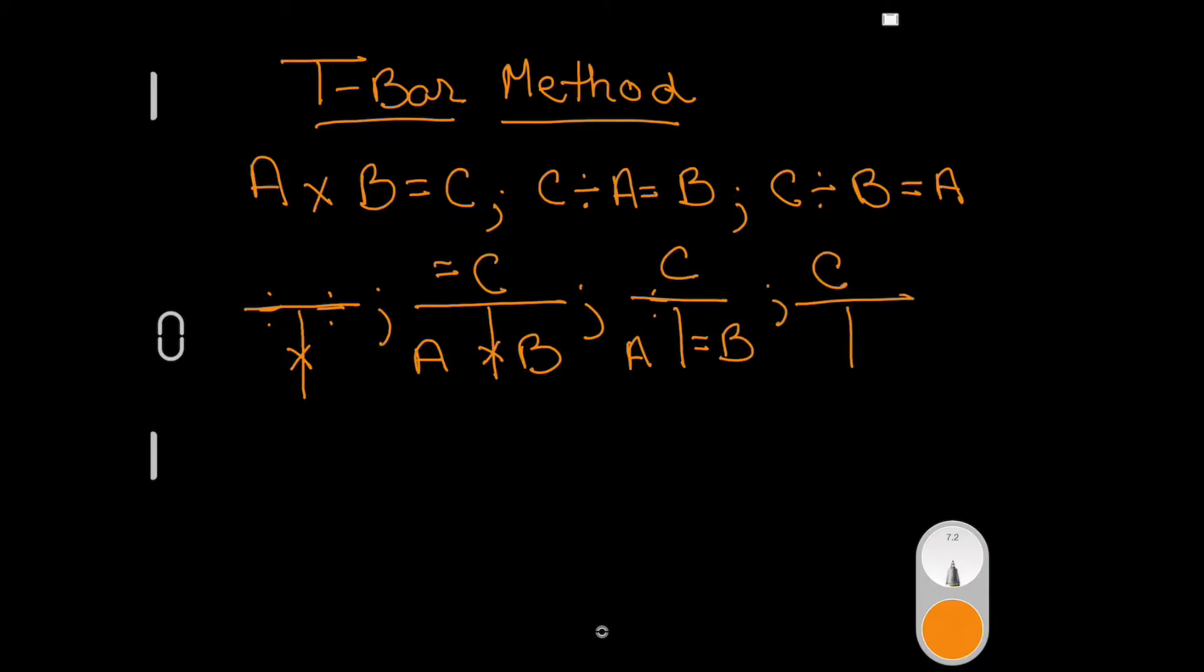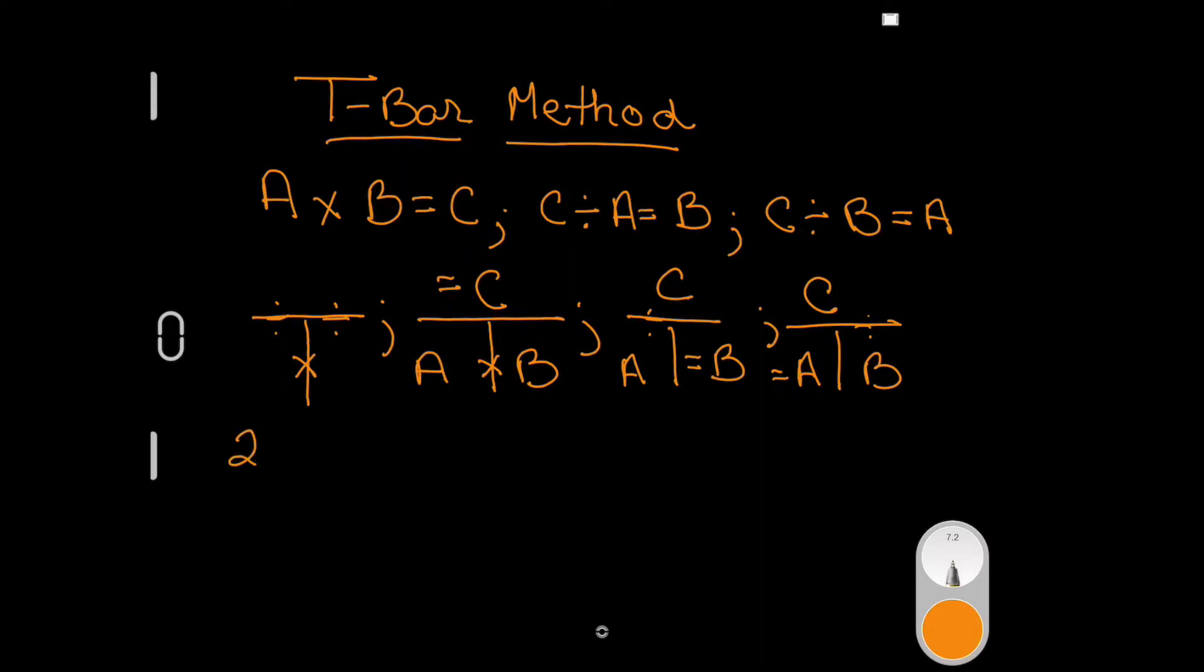Let's try this with a regular math problem. Let's say you have 2 times 3 equals 6. If I put this into a T-bar, I would go 2 times 3 equals 6. But you also know if you had 6 and 2, how many times does 2 go into 6? You know it's 3 times, so that would be 6 divided by 2 equals 3.